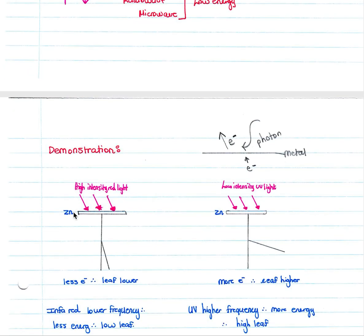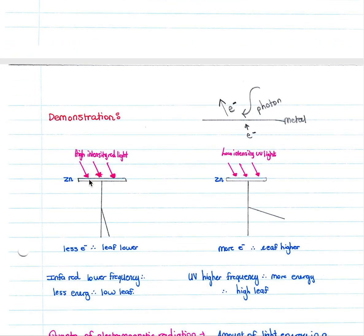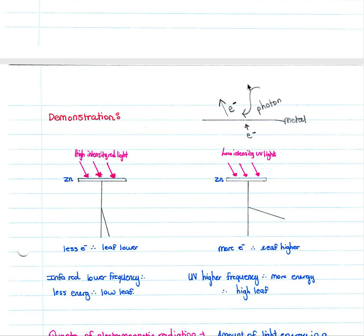In a demonstration, if we have a plate of zinc metal and we shine a high-intensity red light onto that metal, we have fewer electrons and therefore a lower leaf because we have lost electrons from our metal. The infrared has a lower frequency and therefore less energy. Whereas with a low-intensity UV light on a zinc plate, our leaf is higher because we have more electrons. The UV has a higher frequency and more energy, and therefore a higher leaf. The photon or energy parcel released by the light shines onto the metal, gives the electrons energy, and they are released in photoelectric emission.